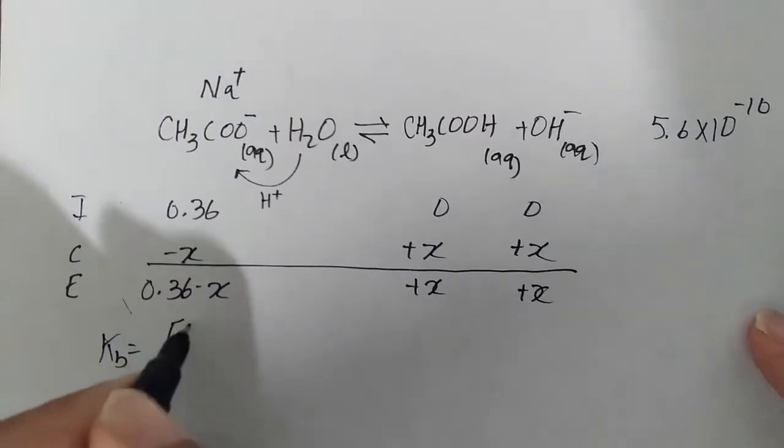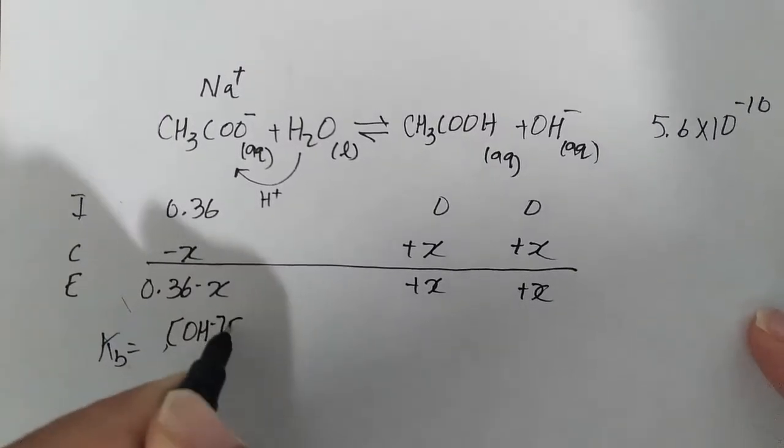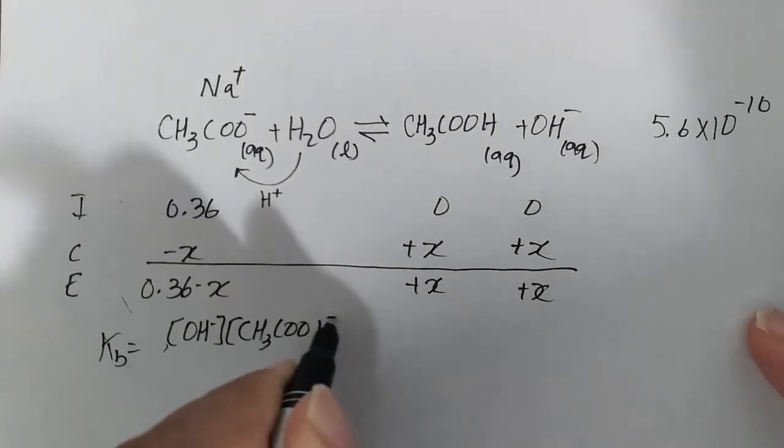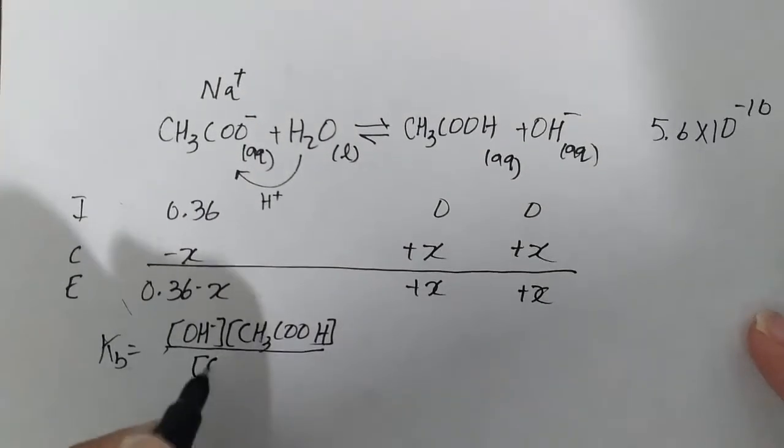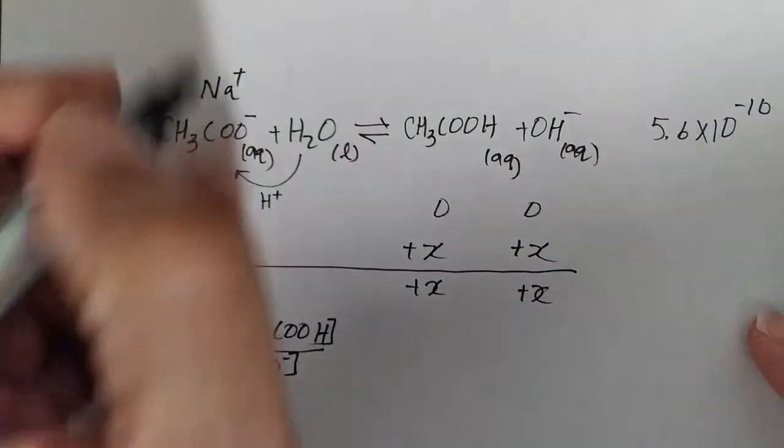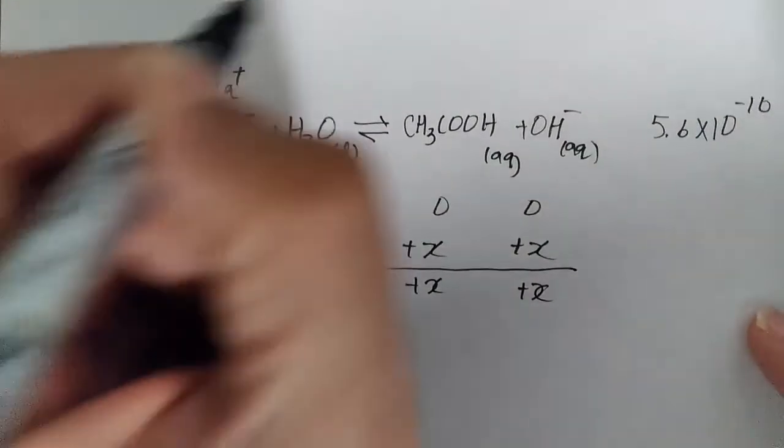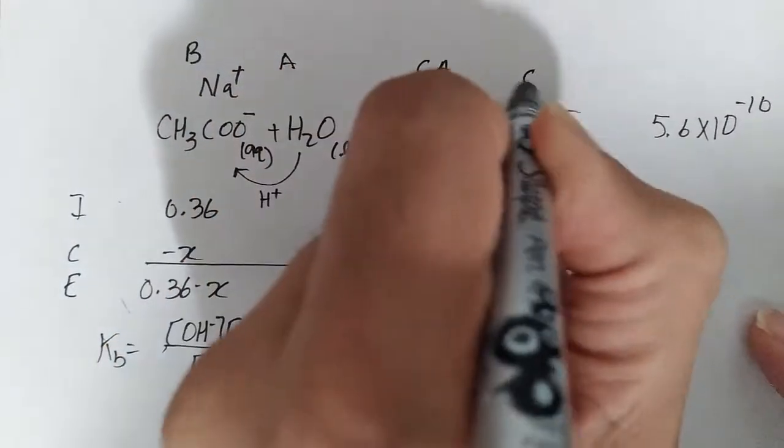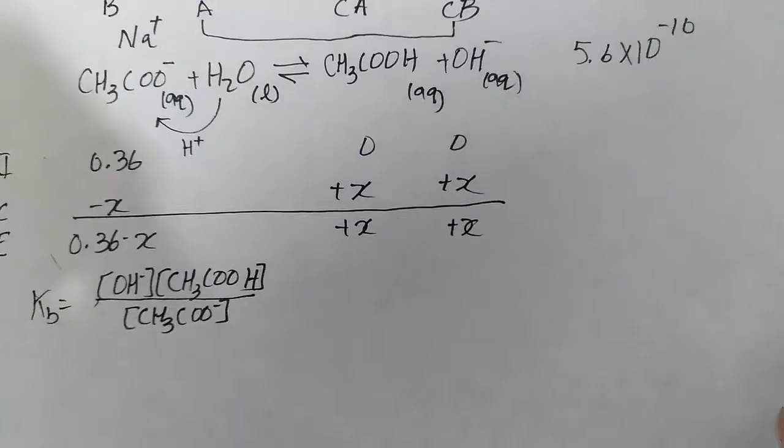We have our KB here, which is going to be OH- times the acetic acid CH3COOH divided by the conjugate base CH3COO-. So base-acid, conjugate acid-conjugate base. Let's plug in numbers here.